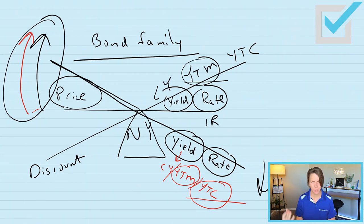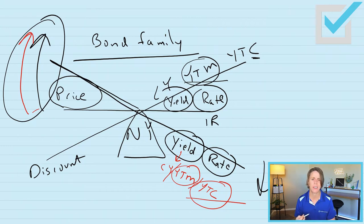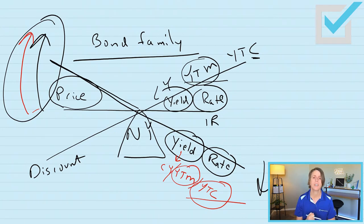If interest rates have gone up, it's still going to be yield to maturity that you would consider in purchasing that bond. Think about it — how likely is an issuer to call a bond if interest rates have gone up? They're not going to call a bond if interest rates have gone up. So if interest rates are stable or if interest rates have increased, yield to maturity would be the best yield to consider when purchasing a bond.